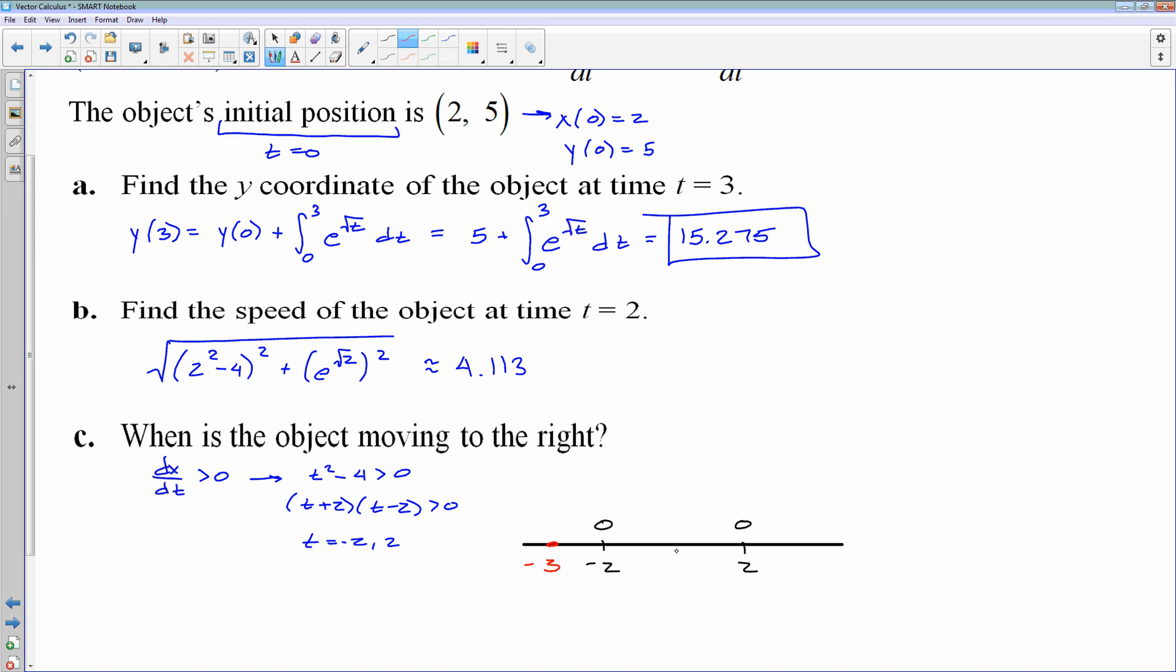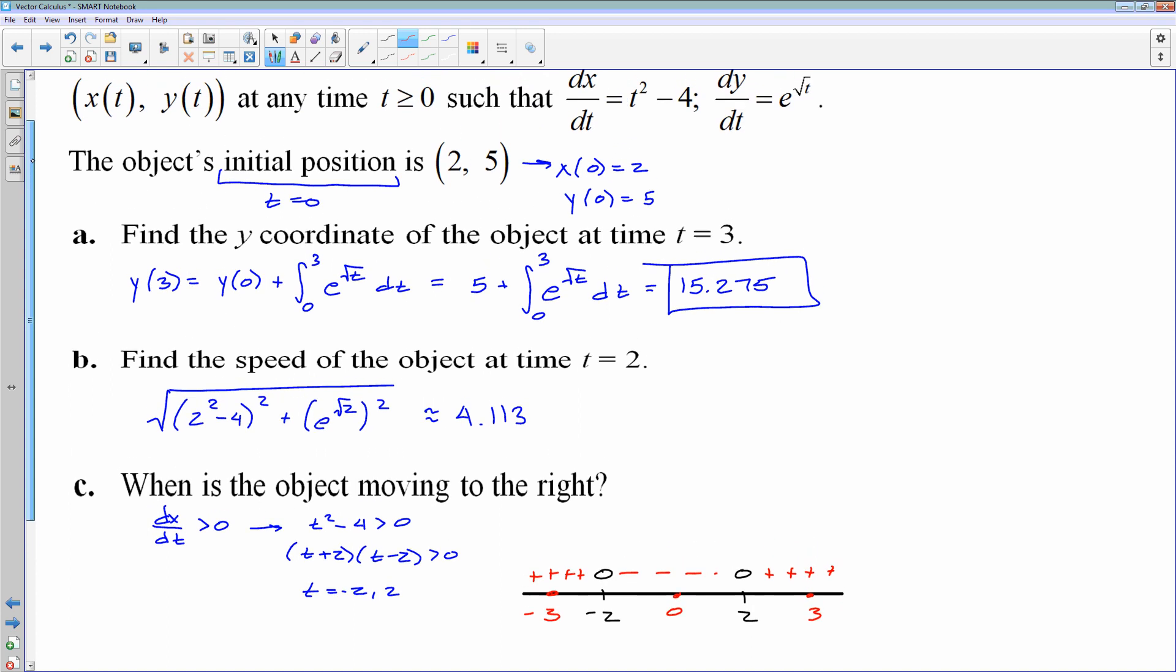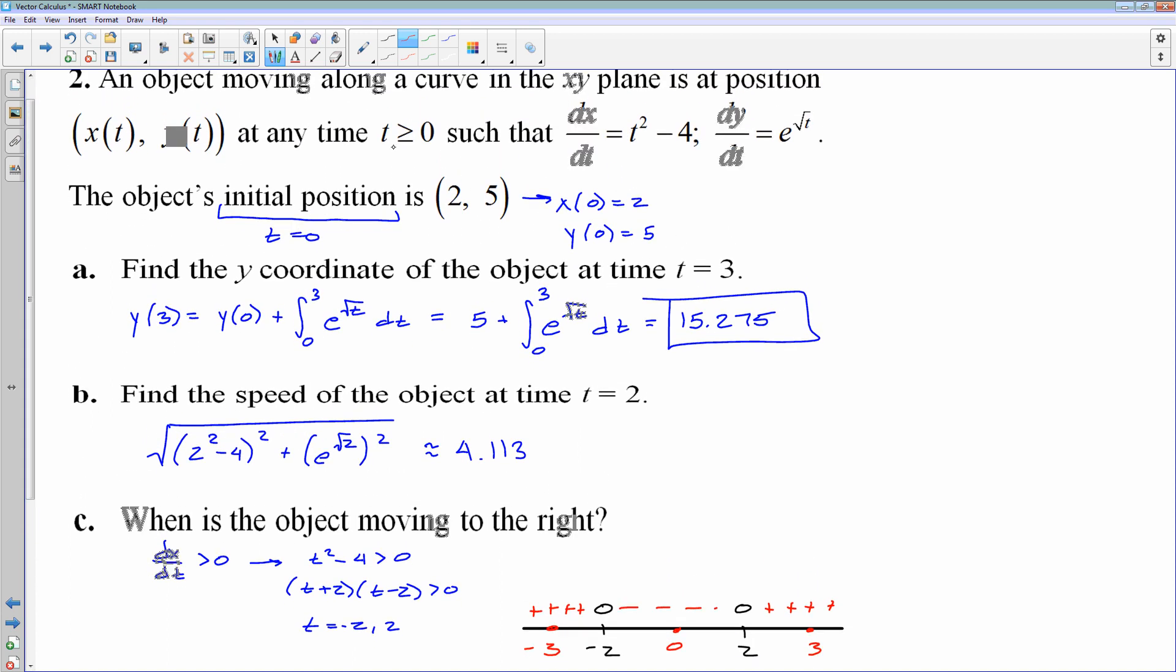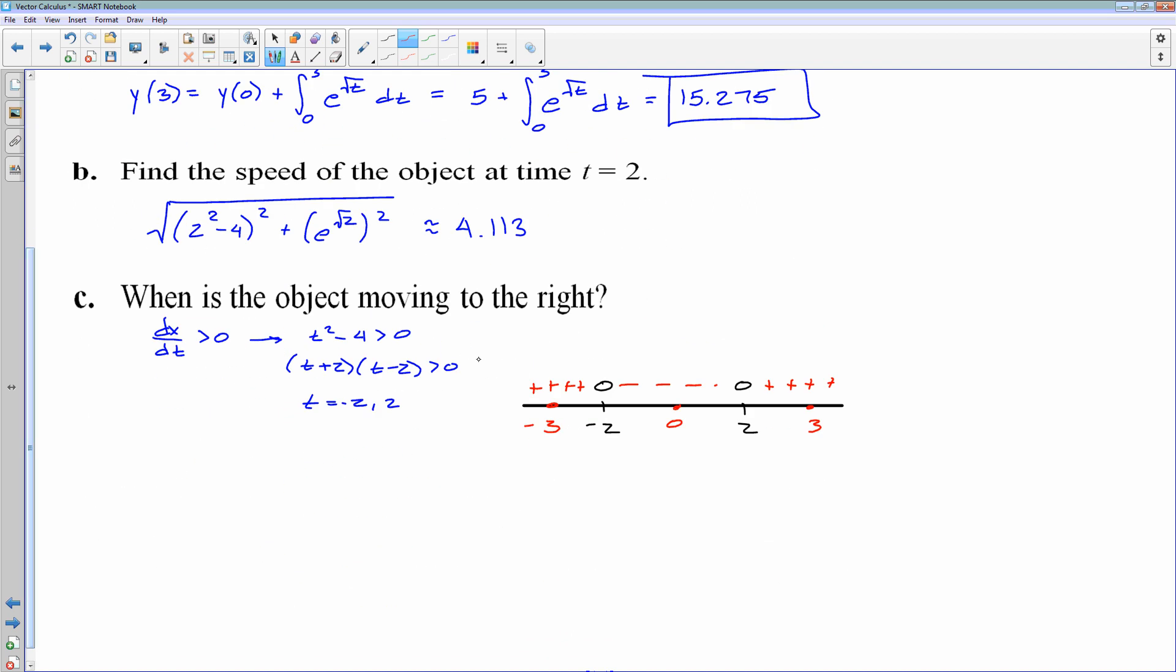And in order to find out when this thing is positive, I'm going to use a good old-fashioned number line. Plot my 2 zeros. Negative 2 and 2 both give me 0. And then I'll plot my test points. Negative 3, 0, and 3. If I plug in negative 3, negative 3² is 9, minus 4 is positive. 0² minus 4 is negative. 3² is 9, minus 4 is positive. And be really careful because you may be tempted to say negative infinity to negative 2 and then 2 to infinity, but remember we're only looking at values of t greater than or equal to 0. So since t must be greater than or equal to 0, this object is moving to the right on the interval 2 to infinity because that's when dx/dt was positive.